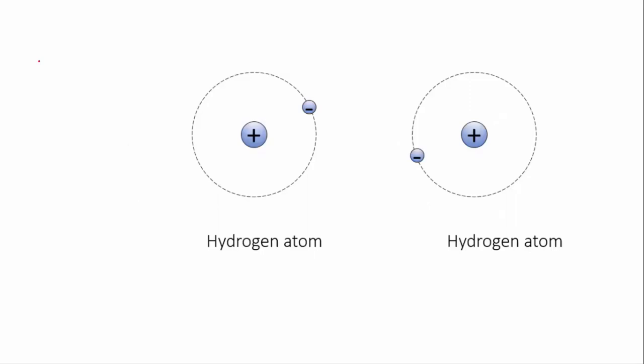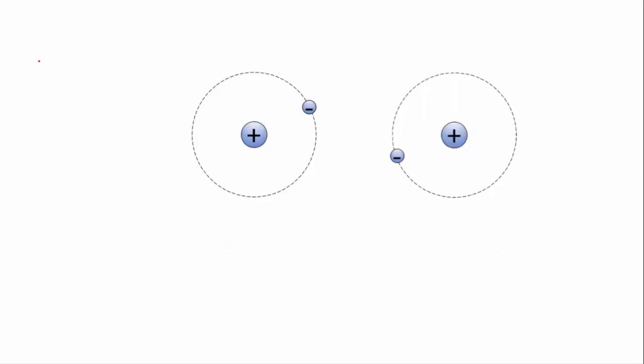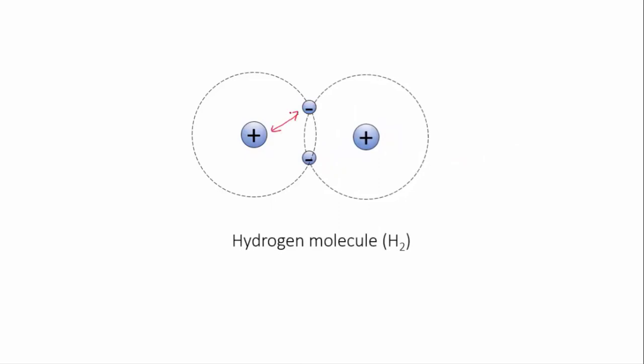Here, each hydrogen atom has one valence electron, and to have a full outer shell it needs two. If the atoms move close together, they can each share the other's electrons so that effectively they both have two. The electrostatic attraction is then between the two positive nuclei of the atoms and the shared electrons.